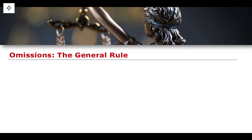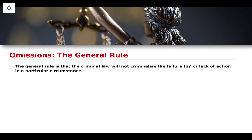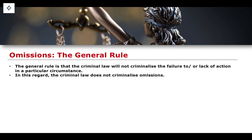We already know what an omission is. The general rule for how omissions can create or negate criminal liability is this: the criminal law does not criminalize the failure to act, or the lack of an action, in a particular circumstance. The bar is essentially higher for omissions versus for acts. There isn't a criminalization of the failure to do something in all general circumstances. However, this does not mean that criminal law doesn't criminalize omissions entirely — it just doesn't criminalize them in their general form.